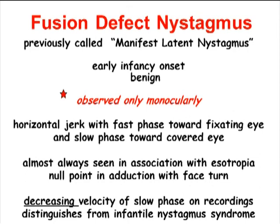When you cover one eye, then you see this fusion defect nystagmus. It is a horizontal jerk with a fast phase toward the fixating eye and a slow phase toward the covered eye. It is almost always seen in association with esotropia, and a null point is usually in adduction with a face turn. It is distinguished from infantile nystagmus syndrome by a decreasing velocity of the slow phase on recording.